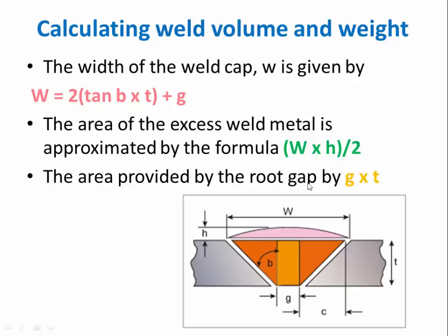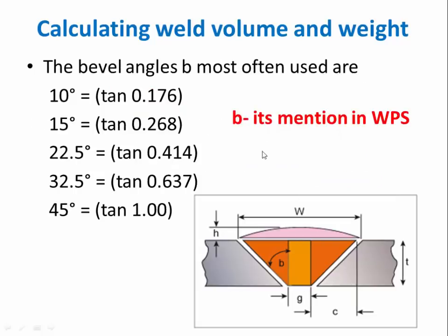The area provided by the root gap is G × T. To find the area for root cap area, G × T, T means thickness. B means bevel angle. Mostly we are using the same metal here.